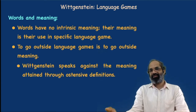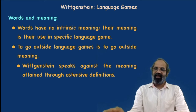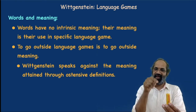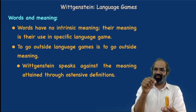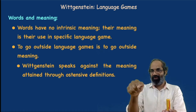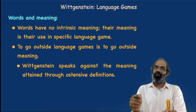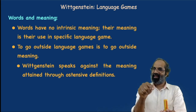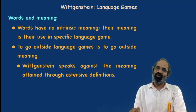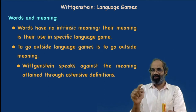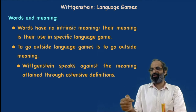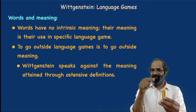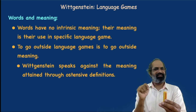Wittgenstein speaks about meaning attained through ostensive definition. Ostensive definition is pointing out — to point out that this is a cell, this is a battery. This is the most definite way in which you can define something: to point out and say this is that thing. We may initially feel that no context is required, no previous knowledge is required, in order to say that this is a cell — that you can understand simply by pointing and telling.